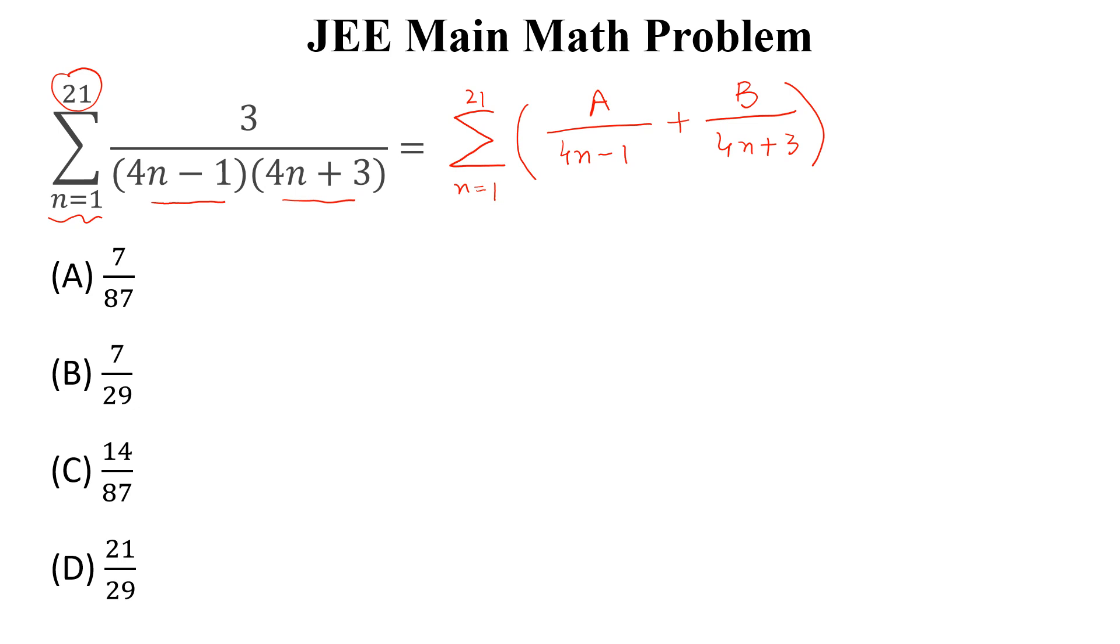And we can find the value of A and B by partial fraction. Next, we can write 3 is equal to A into (4n plus 3) plus B into (4n minus 1) by multiplying both sides.